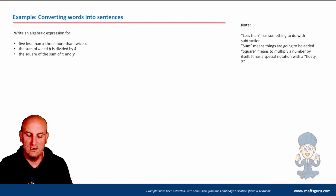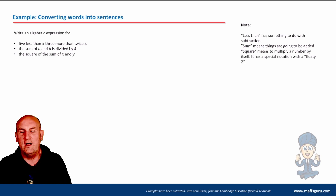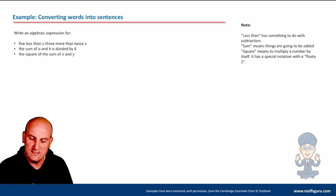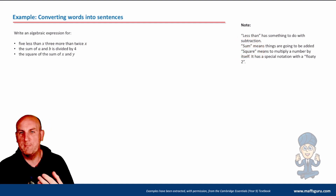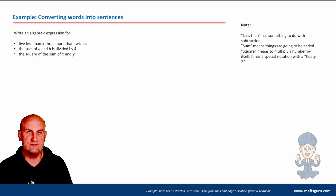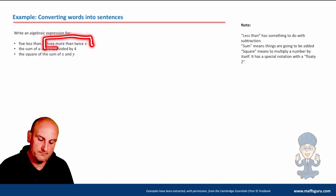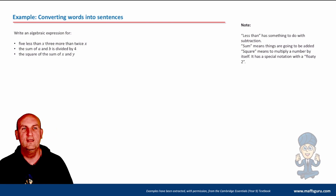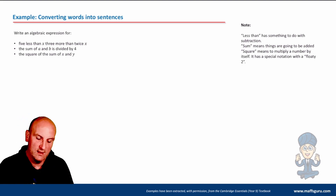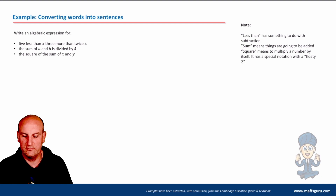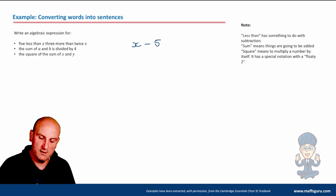Here is more language. Less than means something to do with subtraction. The word sum means plus. Square means to multiply by itself - it's going to have a floaty two. Write an algebraic expression for five less than x. I've got x and they want five less than - that means take away five. So x minus five.